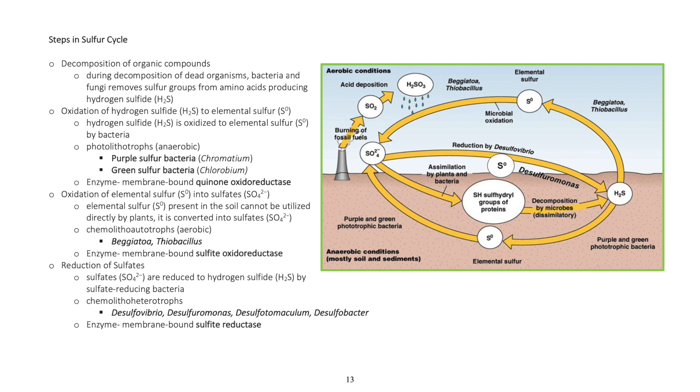Reduction of sulfates. Sulfates are reduced to hydrogen sulfide by sulfate reducing bacteria. Chemolithotrophs: Desulfovibrio, Desulfuromonas, Desulfotomaculum, Desulfobacter. Enzyme: membrane bound sulfide reductase.